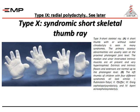Type nine is radial polydactyly, which we will discuss later. Type ten is the syndromic short skeletal thumb ray, where the thumb is short with or without radial clinodactyly and is seen in many syndromes. The primary osseous abnormality is usually at the proximal phalangeal joint level. The median and ulnar-innervated thenar muscles are present and very hypertrophied, with extrinsic and intrinsic flexors and extensors normal up to the phalangeal level.